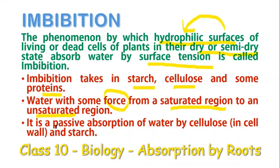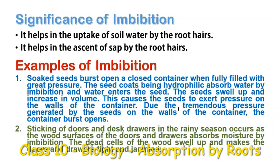Imbibition is generally a passive process because it does not require any energy. The cellulose present in the cell wall and starch are the ones which perform the process of imbibition. Imbibition helps in the uptake of soil water by the root hair cells, and secondly it helps in the ascent of sap — the rising of water from the root hairs to the upper parts of the plant.